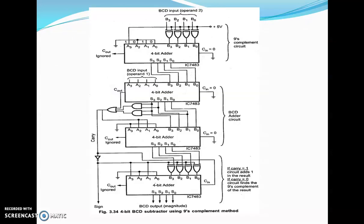Here we have the 4-bit BCD subtraction using 9's complement method circuit, which is divided into three parts: the 9's complement circuit part, the BCD adder circuit, and the carry part. In the 9's complement circuit, it first calculates the 9's complement of the subtrahend. Then we add it in the BCD adder circuit and check for carry. If carry equals 1, the circuit adds 1 to the result. If carry equals 0, the subtrahend is larger in magnitude, indicating a negative answer, so we find the 9's complement of the result.